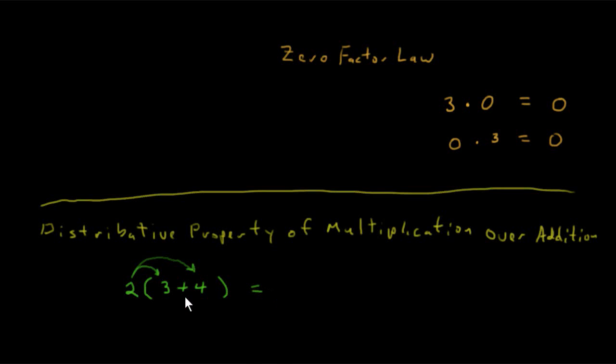And so this is equal to, if we take the product of the numbers first that are inside the parentheses. In other words, 2 times the 3 plus 2 times the 4 will get the same result that way. Then if we did it with the addition first and then the multiplication.